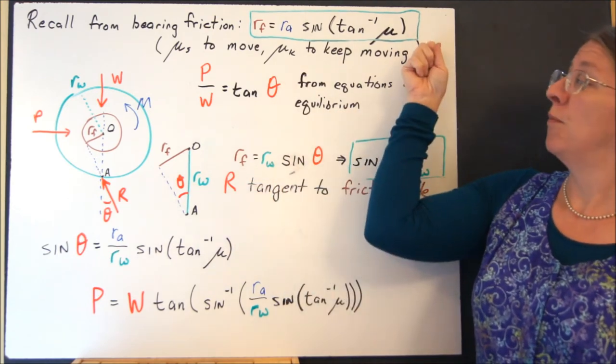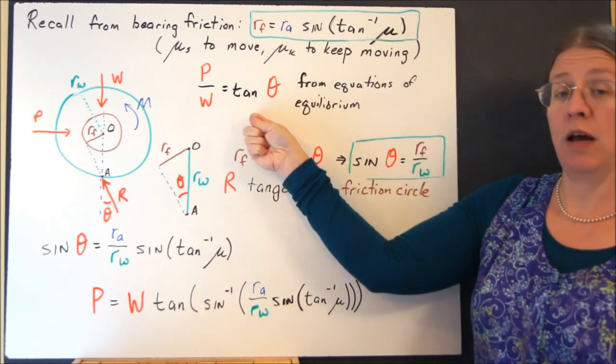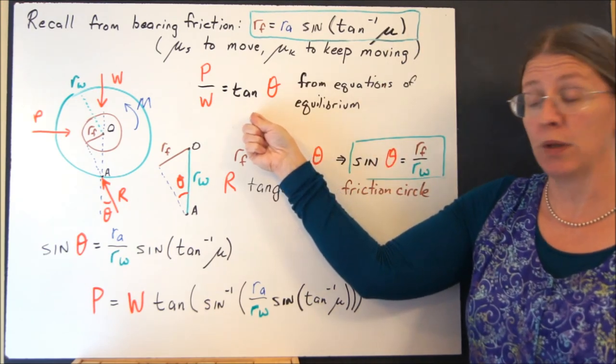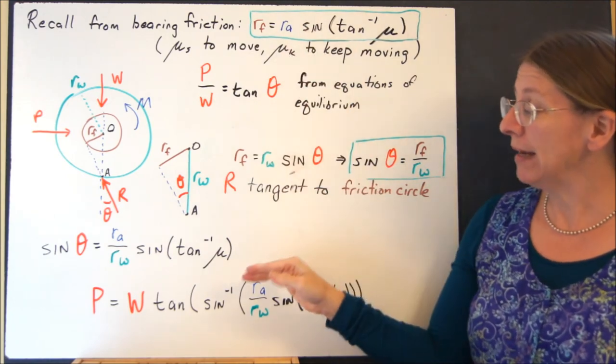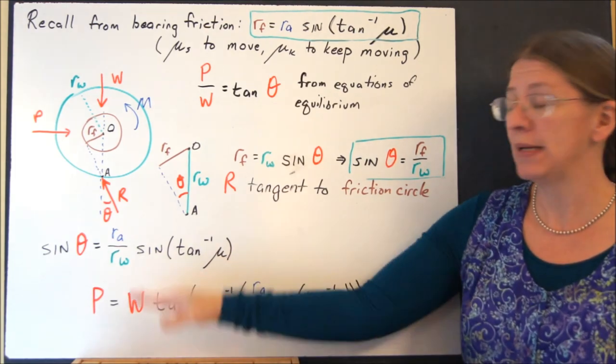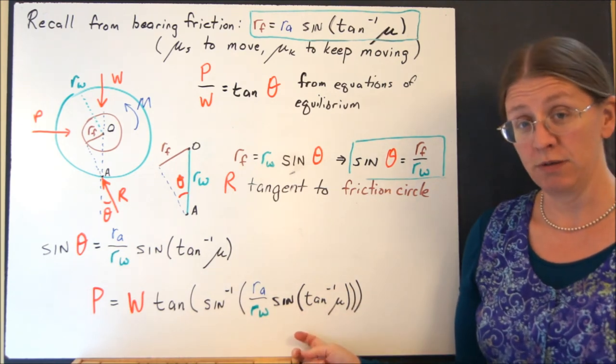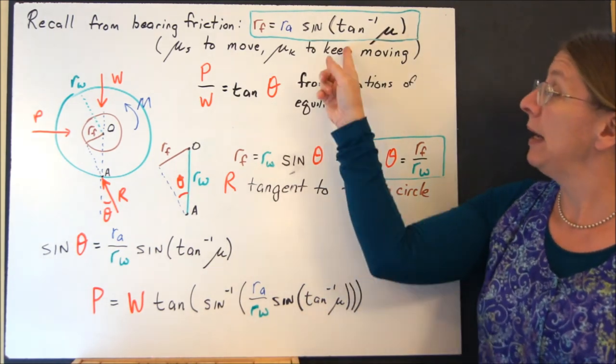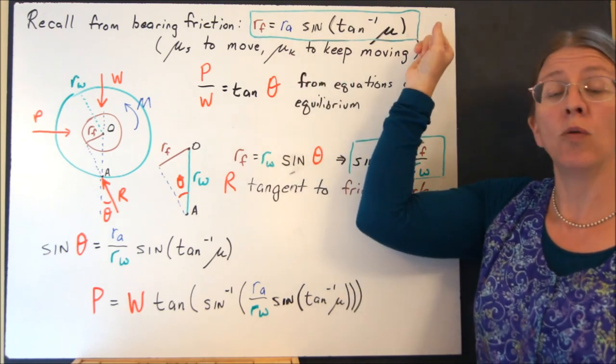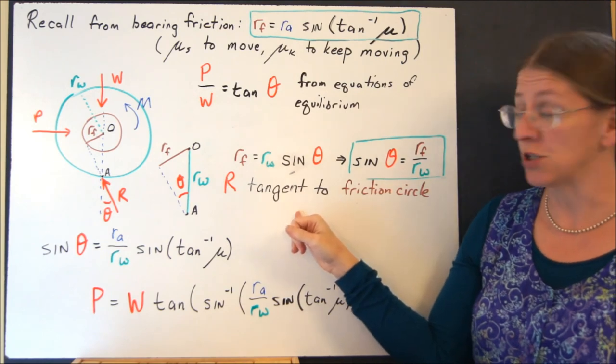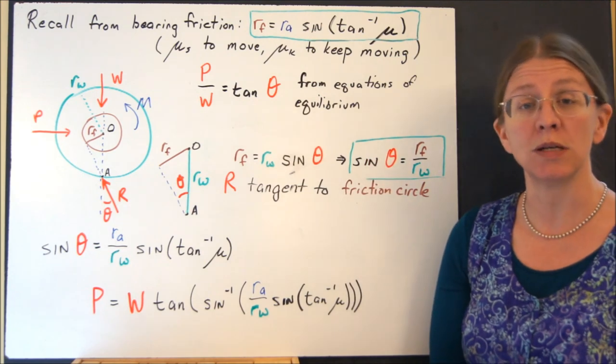So I have the friction that comes from the bearing, or the axle. I have a relationship that comes from equilibrium. And I have a relationship that comes from the geometry. I can combine those three equations to find out what P is. Nobody's actually going to remember this part. That is a ridiculous equation to actually try to remember. But each of these is fair game. You need to understand how the friction circle is defined. You need to know that R is tangent to it. And then here's your triangle from geometry. And obviously this one comes from the equations of equilibrium, which is the most important thing that we're doing right now.